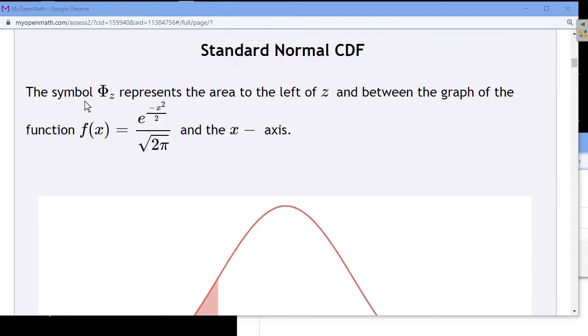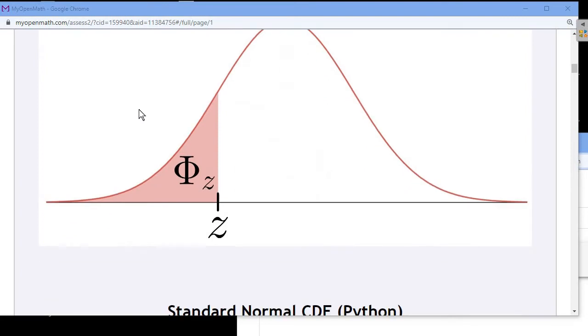On the other hand, uppercase phi of z represents the area, that pink area between that density curve, the x axis and the vertical line x equals z. So all this area over here, all that area is represented by the symbol capital phi of z.